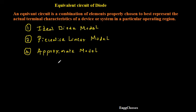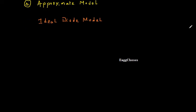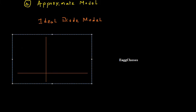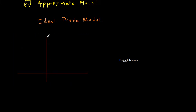First let me consider the ideal diode model. We will try to explain this with the help of VI characteristics. The y-axis represents the current ID, and the x-axis represents the forward diode voltage Vd.